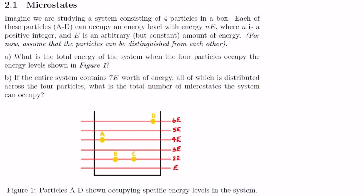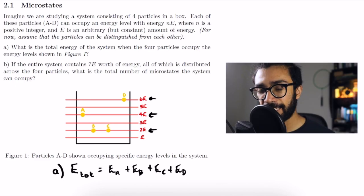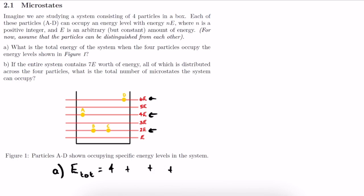Starting with our solution to part a, the total energy E_tot of the system equals the energy of particle a, plus particle b, plus particle c, plus particle d. That gives us 4e plus 2e plus 2e plus 6e. So the total energy carried by the system in this particular configuration is 14e.